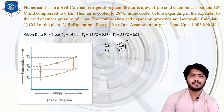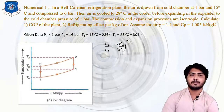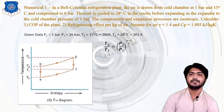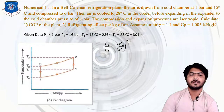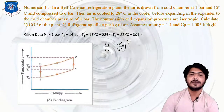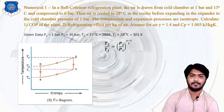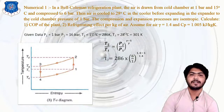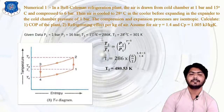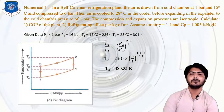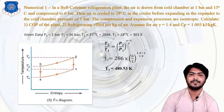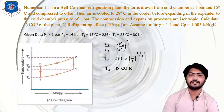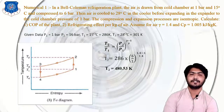With gamma = 1.4, P2 = 6 bar, P1 = 1 bar, and T1 = 286 K, substituting all values we obtain T2 = 480.53 K. So first we have calculated temperature T2.